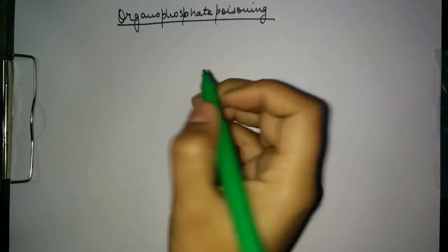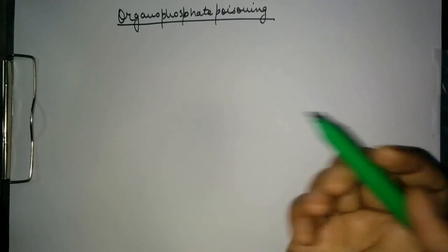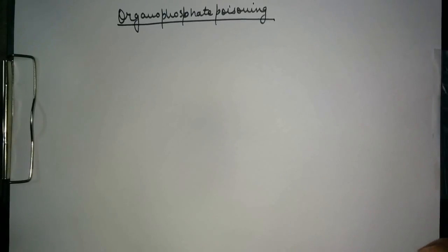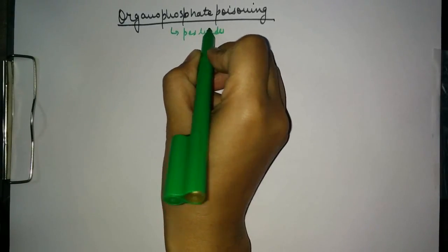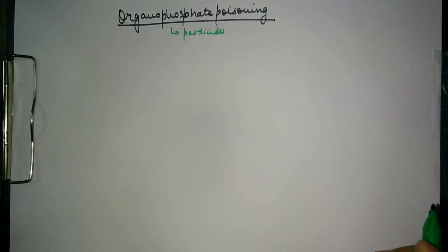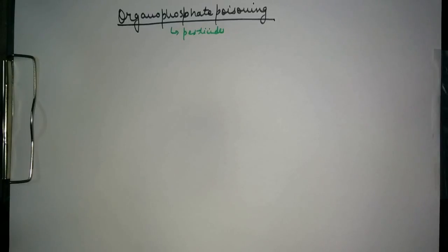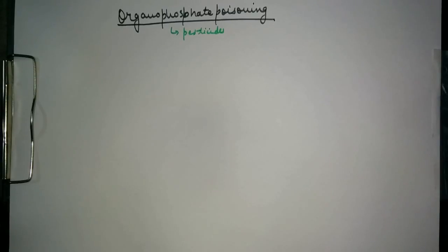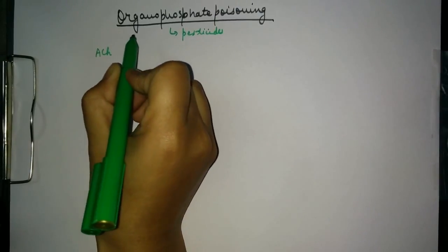In this video we are going to talk about organophosphate poisoning, or the pathophysiology of organophosphates. Organophosphates are basically pesticides, and almost all of the food we consume has been exposed to pesticides. These pesticides also enter our body along with the food, and when they are present in a large amount, they lead to some seriously dangerous effects in our body.